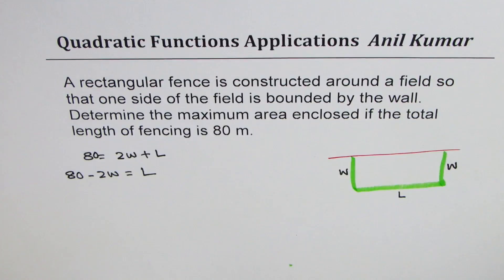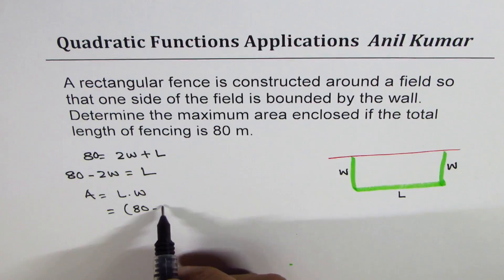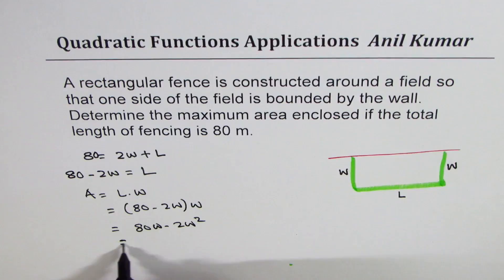Now we need to find maximum area enclosed. Area is length times width. We can write length in terms of width, which is (80 minus 2W) times W. So if you open this bracket we get 80W minus 2W².